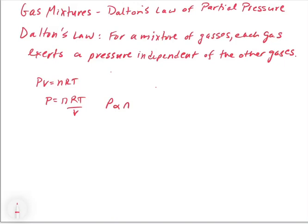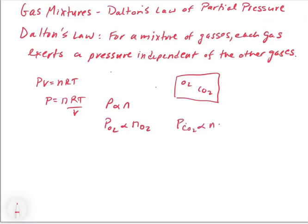This is fundamental because the number of moles doesn't specify of what — it just specifies the number of moles. So the pressure of O2, for example, is going to be proportional to the number of moles of O2. And if we have a mixture of O2 and CO2, then the pressure of the CO2 is going to be proportional to the number of moles of CO2. This concept comes from our understanding of the empirical gas laws.